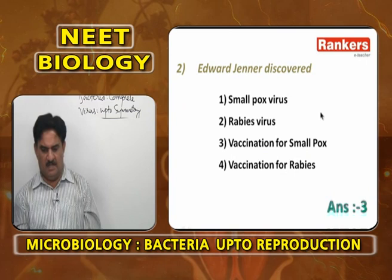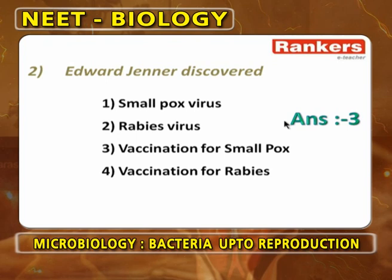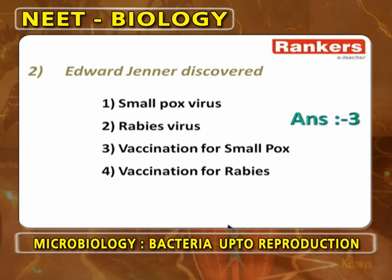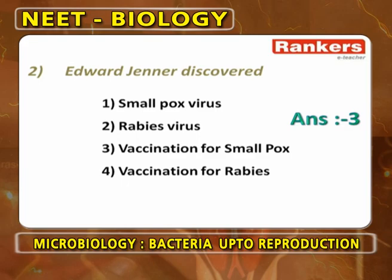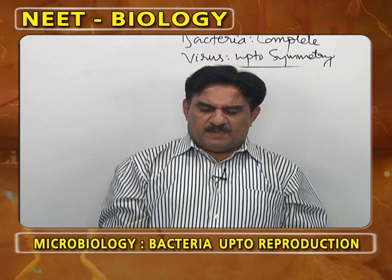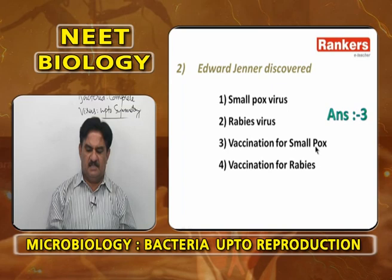Edward Jenner discovered that smallpox disease is caused by some organism smaller than bacteria, and he discovered a vaccination for smallpox. Vaccination for rabies is by Louis Pasteur; vaccination for smallpox is by Edward Jenner.